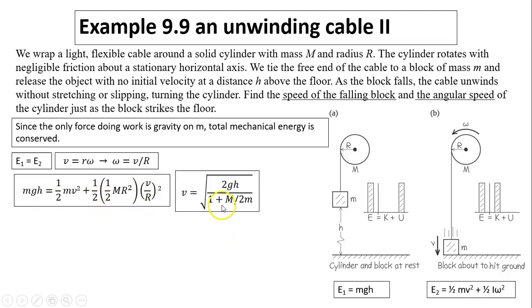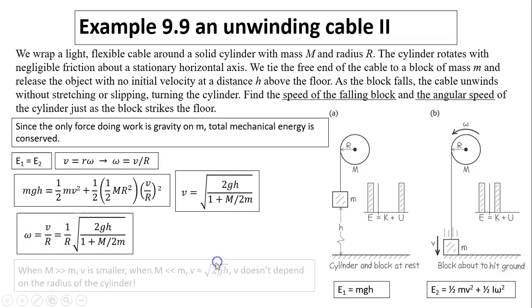Then you have to find angular speed. Omega equals V over R equals to this. Here's a special case. When this M is much, much bigger than the little m, V is very small because most energy is spent rotating the disk. But if the disk's mass is much, much smaller than the mass of the block, then V is almost equal to square root of 2GH. It's almost like freefall. Remember, this V does not depend on the radius of the cylinder at all.